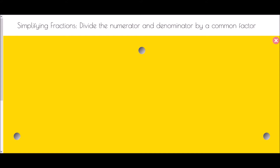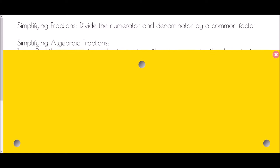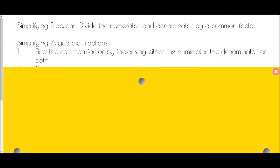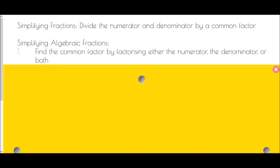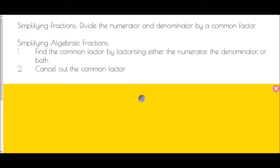We want to start with a normal basic fraction. If I wanted to simplify a fraction, I would divide the numerator and the denominator by a common factor. Well, in terms of algebraic fractions it's pretty much exactly the same. We need to find the common factor by factorising either the numerator or the denominator, or both, and once we've done that we cancel out the common factor.